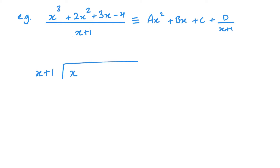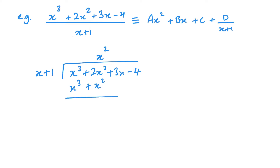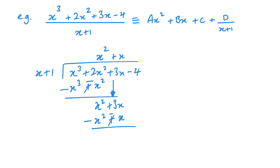Setting up long division: put x plus 1 outside and x cubed plus 2x squared plus 3x minus 4 inside. x goes into x cubed giving x squared. x squared multiplied by x is x cubed, and x squared multiplied by 1 is x squared. Changing signs and adding cancels the x cubed, leaving x squared. Bringing down the next term: x goes into x squared giving x, so we have x squared plus x.